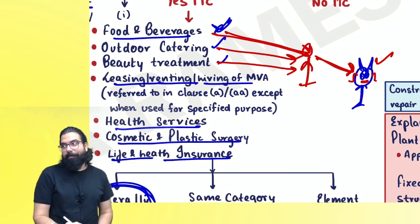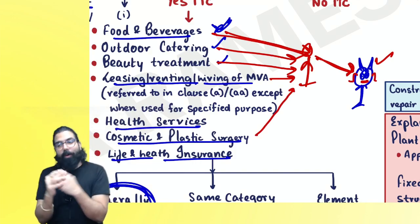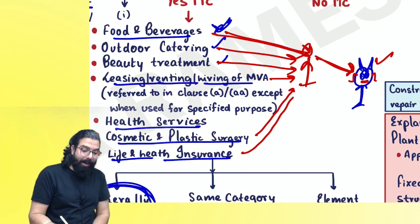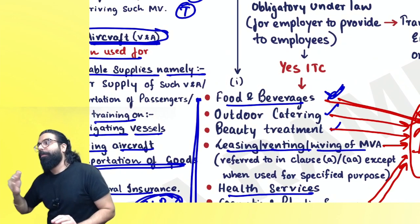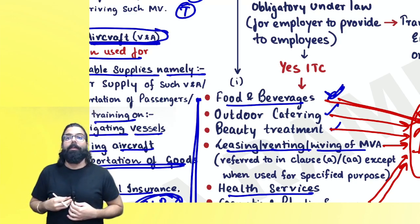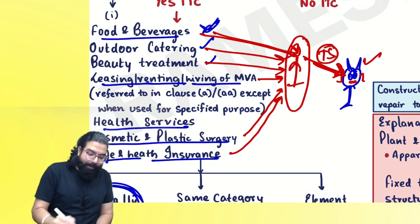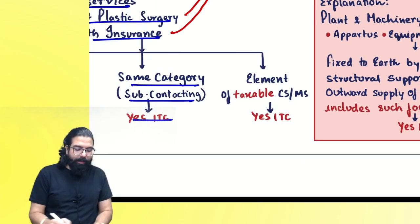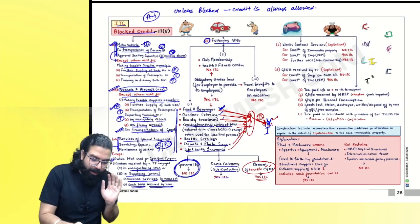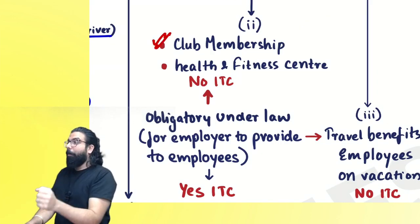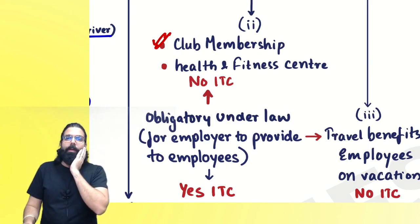Event management example: If you are an event manager providing event management services, and you arrange food, catering, beauty treatment, motor vehicle on rent, cosmetic surgery, life insurance — all as elements of your composite/mixed outward taxable supply — you will get the credit on all of these. The key: if these are used to provide your outward taxable supply and are part of composite or mixed supply, credit is allowed. Club membership given to director — will the company get GST credit?